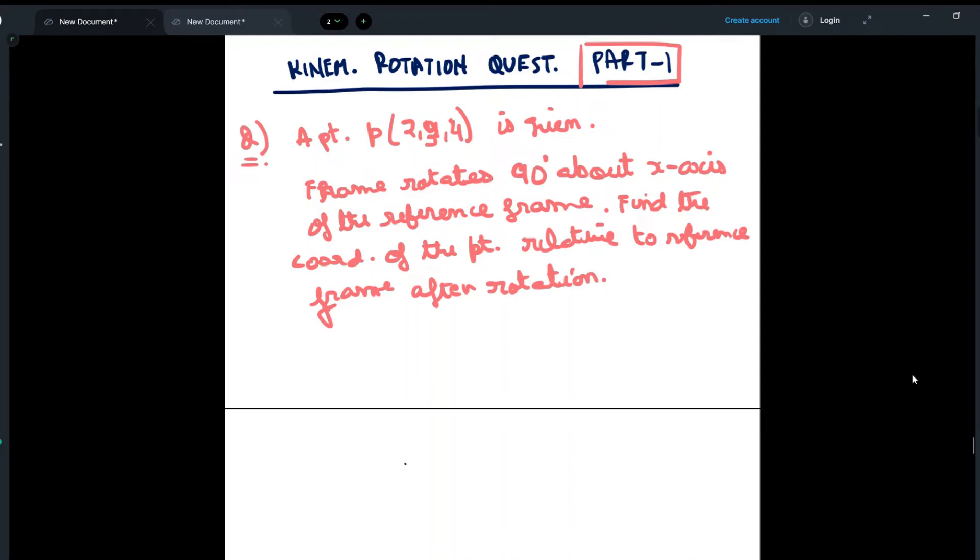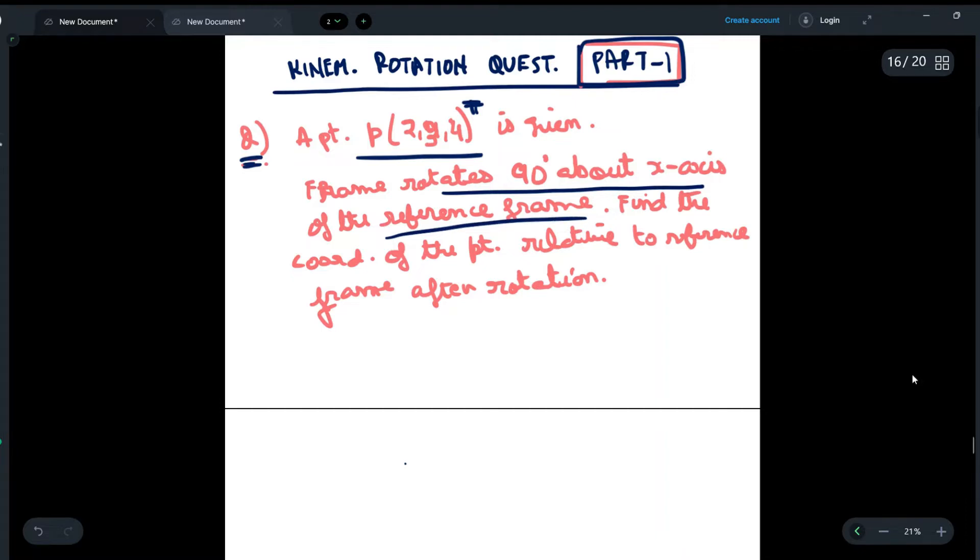Hey guys, today we are going to do a question on kinematics rotation, and this is part one of the video. We are given a point P(2,3,4) in transpose form, and the frame rotates 90 degrees about the x-axis of the reference frame. We have to find the new coordinates of point P relative to the reference frame after rotation.